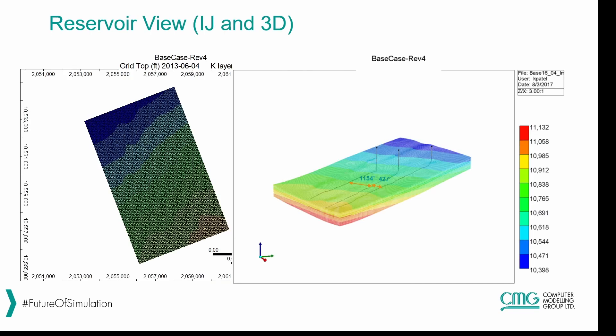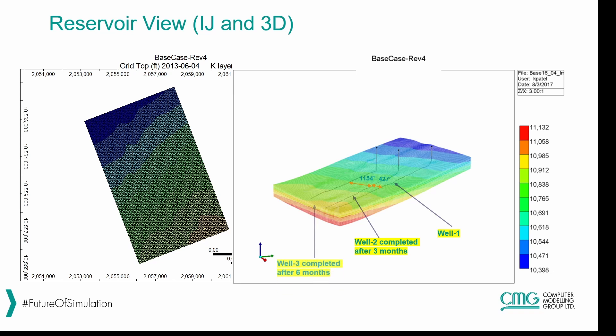This is the reservoir view — the aerial and 3D view of the model. Well one is fractured first and comes online first and is produced. After three months, well two is fractured, completed, and produced. Then after three more months, well three is completed and produced.